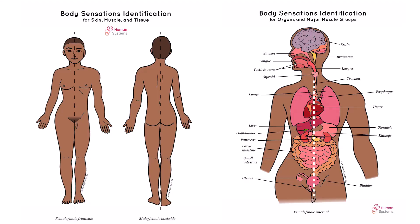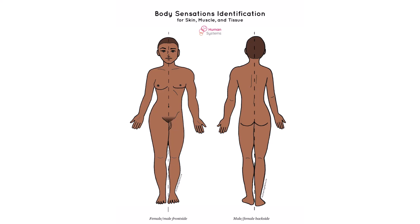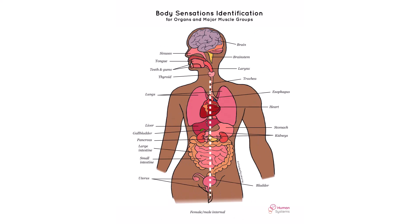First, it provides both an outer and inner diagram of the human body to aid users in finding and locating body sensations. The outer body diagrams are for identifying sensations in the skin, muscle, and tissues. The inner body diagram includes major organs and muscle groups, including the heart, tongue, and digestive system.